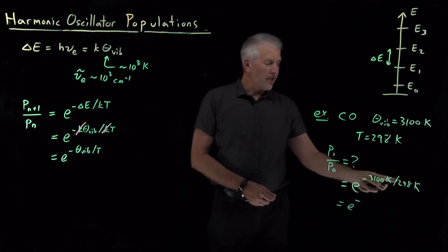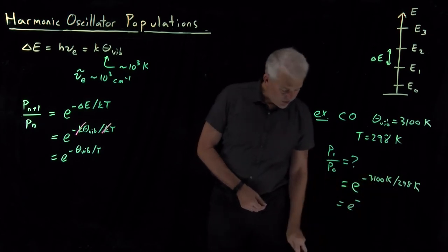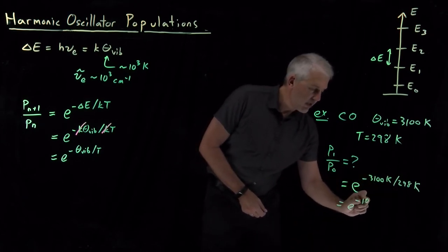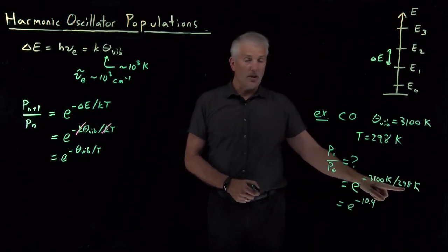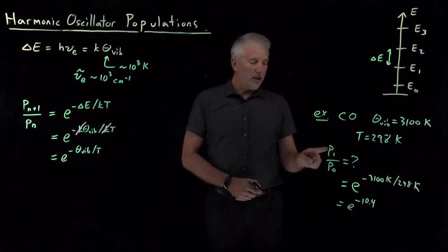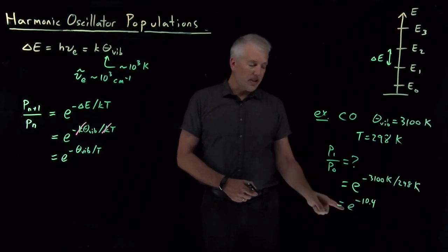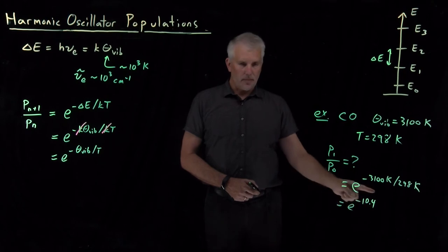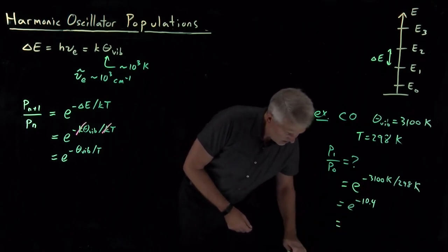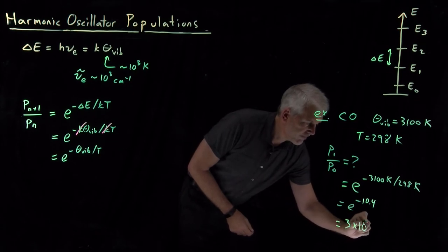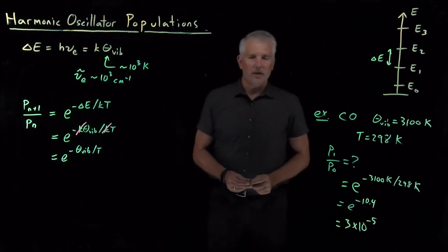Doing the arithmetic in the exponent first, 3100 divided by 298, that works out to be a little over 10. So the vibrational temperature is a little more than 10 times as large as the actual temperature, so that means our ratio of populations is going to be E to the minus something a little larger than 10. That's a pretty small number. That's 3 times 10 to the minus 5.